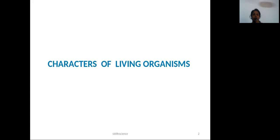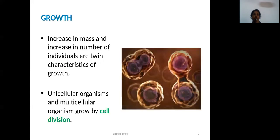What are the characters of living organisms? The first one is growth. Increase in mass and increase in number of individuals are the characteristics of growth. Growth is a very important feature. Two features are mass and number of individuals. Now, we are learning about the number of cells — unicellular or multicellular.